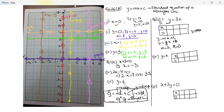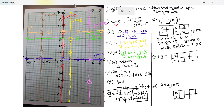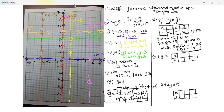If x is zero, y equals 3 times 0 which is zero. If x is two, y equals 3 times 2 which is six — so we have the point (2, 6). If x is negative one, y equals negative three. Notice: for drawing any straight line you need to plot a minimum of three points. Show your calculations and put them in a table.